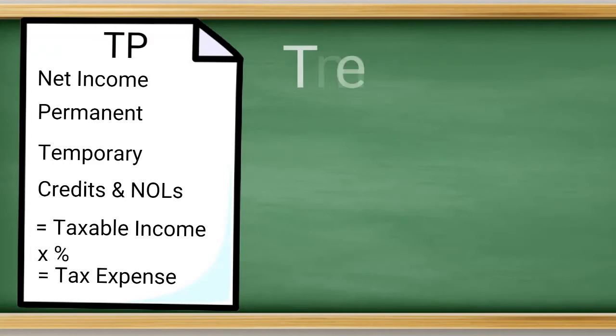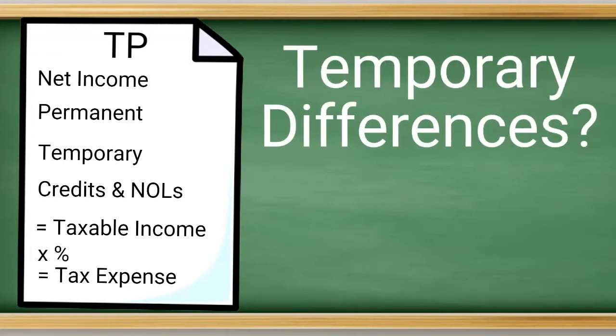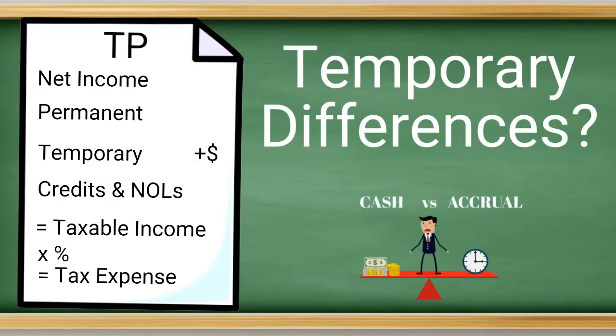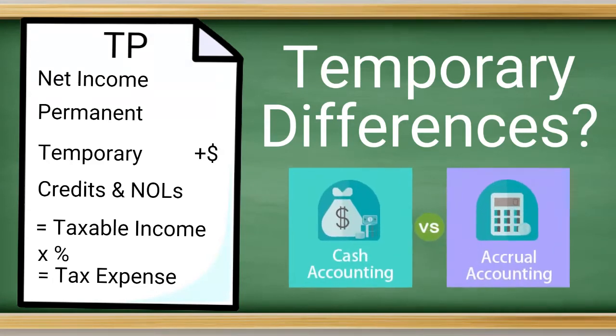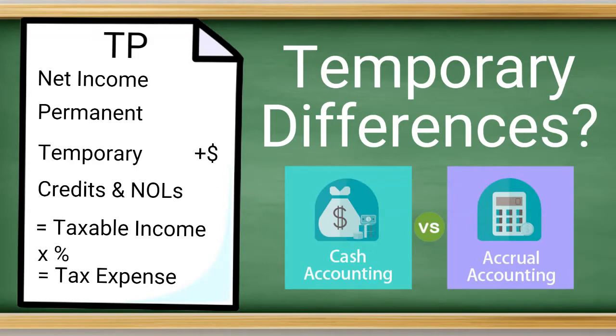So the next one, and our focus for deferred, is temporary differences. As the name implies, these differences are temporary and will eventually revert to the net income amounts. This can be caused by things such as the cash versus accrual method. For example, you may have generated $100 in revenue, but if you haven't collected the cash, then it doesn't get added to income. Therefore, the cash versus accrual method is a large difference that is usually temporary.